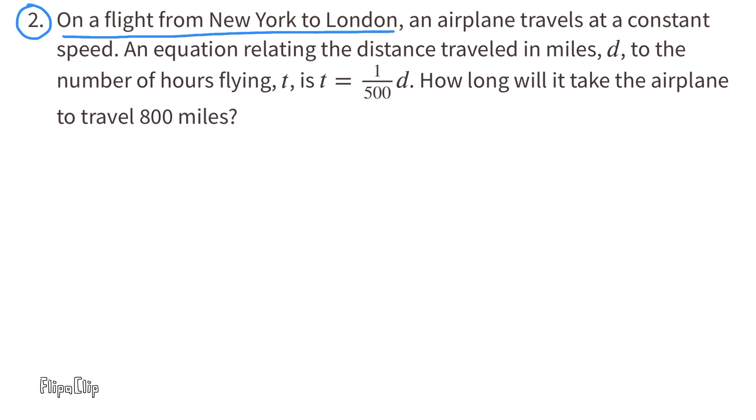Number 2. On a flight from New York to London, an airplane travels at a constant speed. An equation relating the distance traveled in miles, d, to the number of hours flying, t, is t equals 1 over 500 times distance, or t equals 1/500 d. How long will it take the airplane to travel 800 miles?